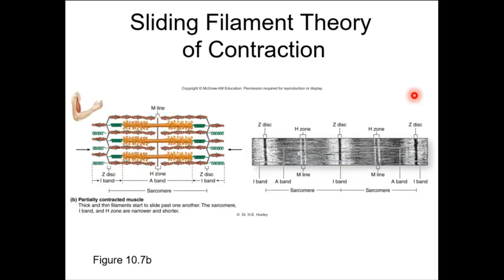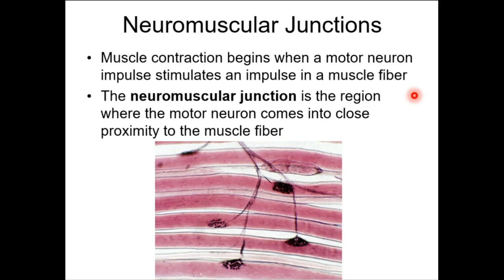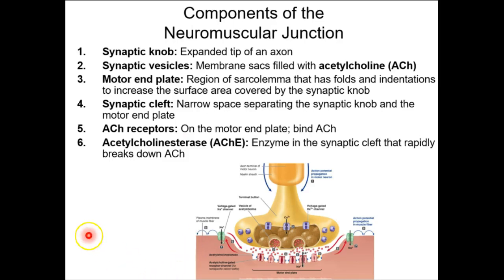The only way contraction occurs is in the presence of a neural impulse. You need nerves to fire onto muscles, and when nerves fire onto muscles, that sends an electrical signal. When a neuron fires, there's anatomy associated with the end of the neuron and the place it reaches the muscle.